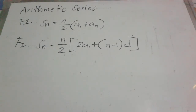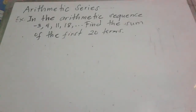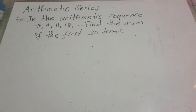So to better understand, let's have an example. In the arithmetic sequence negative 3, 4, 11, 18, and so on, find the sum of the first 20 terms.